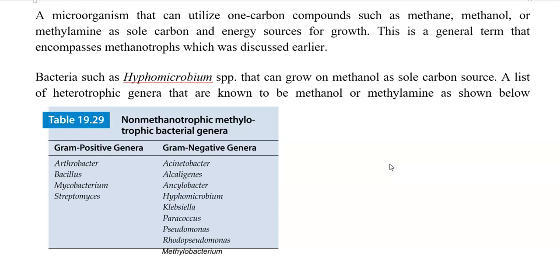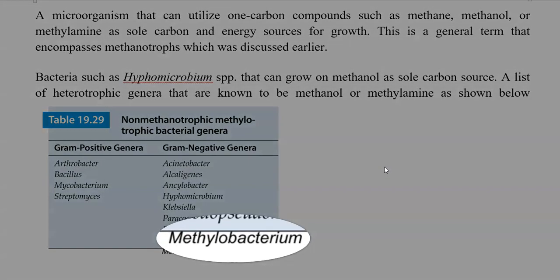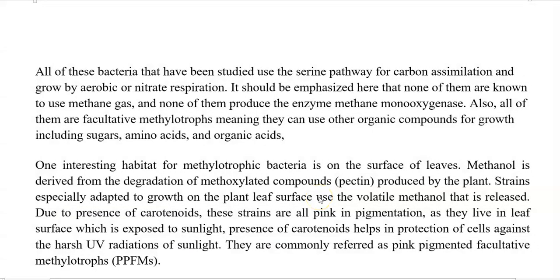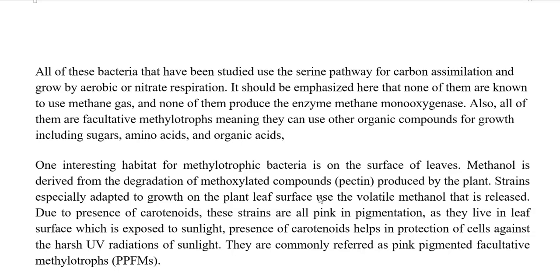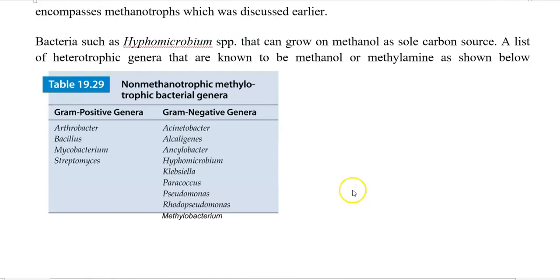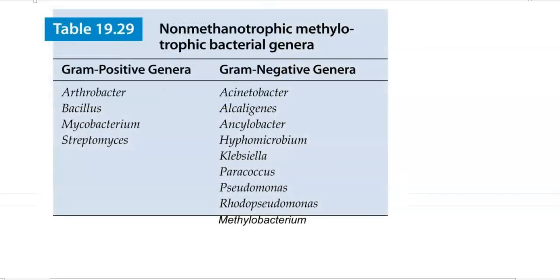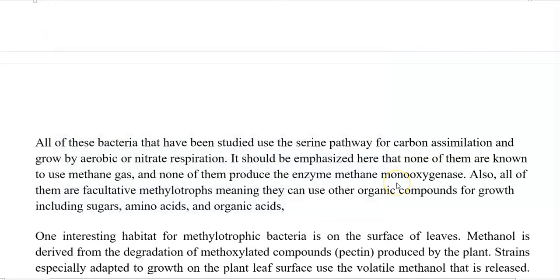Among gram-negative bacteria, a typical methanolotrophic group is Methylobacterium. All of these bacteria have been found to use the serine pathway for carbon assimilation from formaldehyde. They can grow by aerobic or nitrate-based respiration. Importantly, none of the non-methanotrophic methylotrophs listed were able to use methane gas as a carbon source, and none were found to produce the enzyme methane monooxygenase.